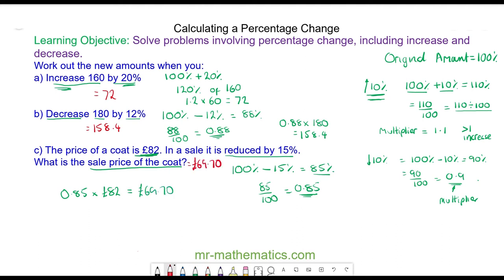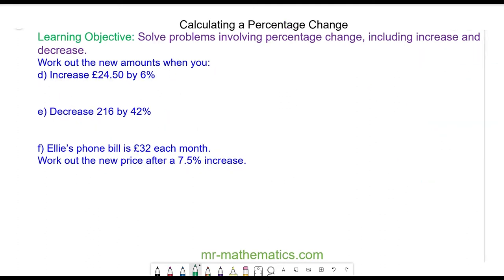Okay, let's try some more questions. Work out a 6 percent increase of £24.50 and a 42 percent decrease of 216. You can pause the video and resume it when you are ready.